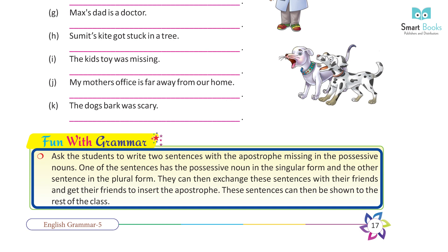Fun with Grammar: Ask students to write two sentences with the apostrophe missing in the possessive nouns — one sentence with the possessive noun in the singular form and the other in the plural form. They can then exchange these sentences with their friends and get their friends to insert the apostrophe. These sentences can then be shown to the rest of the class.